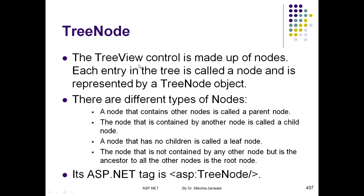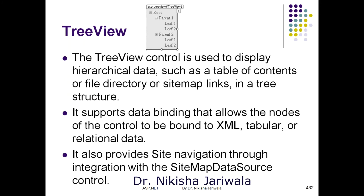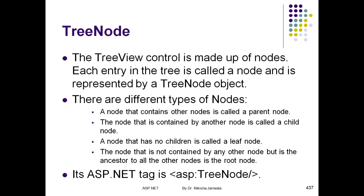Now let's discuss the TreeNode class, because just like list controls have a ListItem class for individual items, in TreeView we have the TreeNode class. TreeNode class creates different node objects. There are different types of nodes — parent nodes that contain child nodes, the root node which is the topmost node, leaf nodes which are nodes with no children, and child nodes which are nodes contained by any other node.